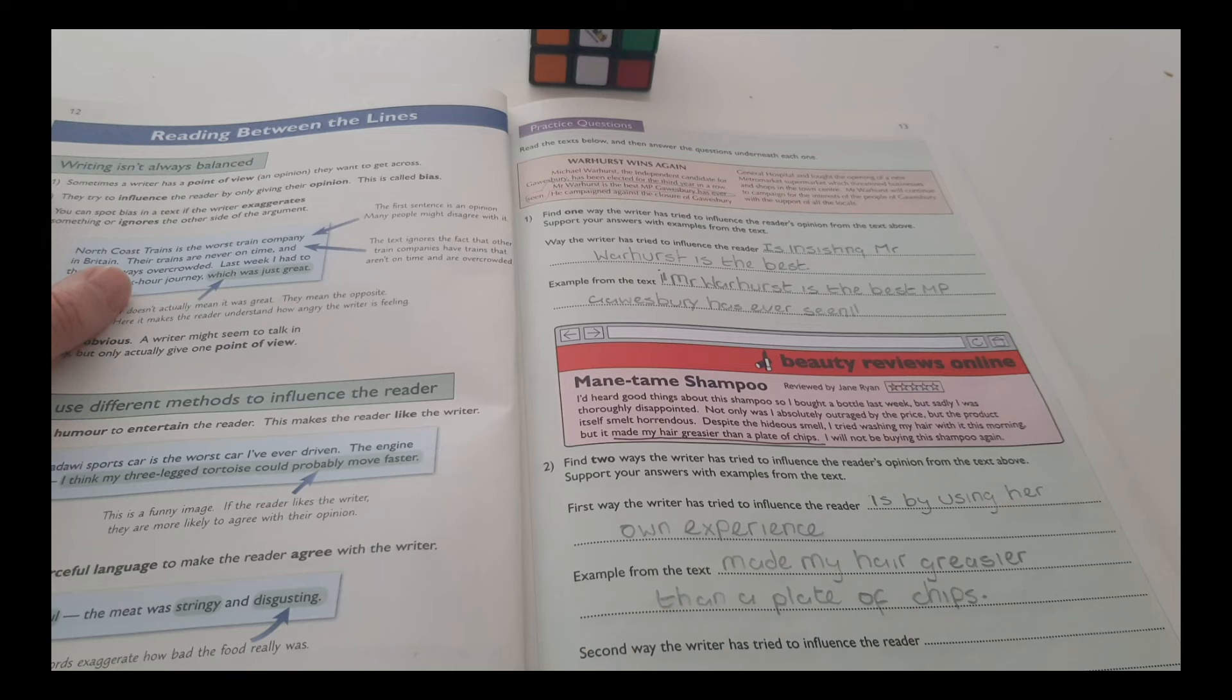Find one way the writer has tried to influence the reader's opinion from the text above. A way the writer has tried to influence the reader is insisting Mr. Warhurst is the best. Example from the text, Mr. Warhurst is the best MP Gay-Westbury has ever seen.